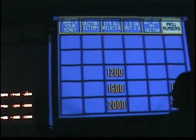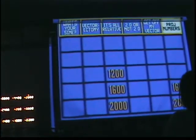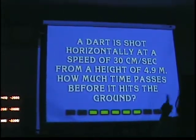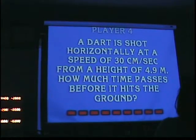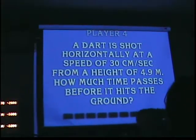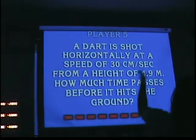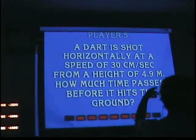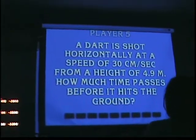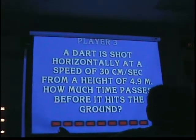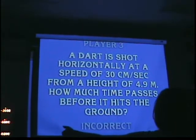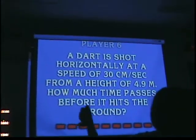We got 4,000. Check out number 1,600! Player 4. You got an incorrect. Player 5. An object drops 5 meters — how much time? 34.5? No! 34.9? No! One second! One second is correct!